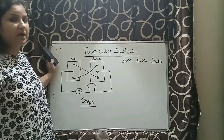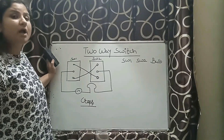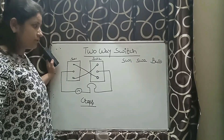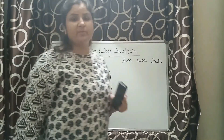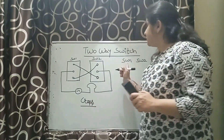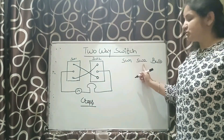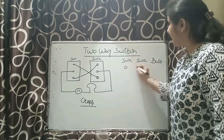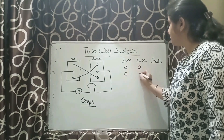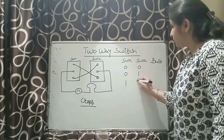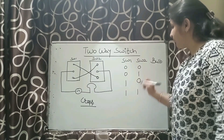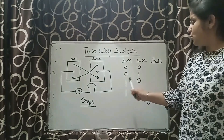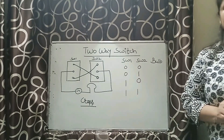For example, a bulb. Now let us see how the truth table can be designed in the case of cross connection. We have switch number 1, switch number 2, and then bulb. Once again: 00, 01, 10, and 11. Here, 0 means switch off and 1 means switch on.